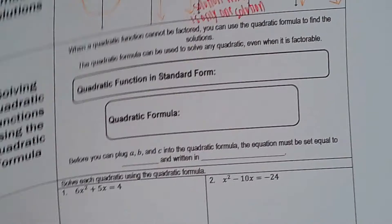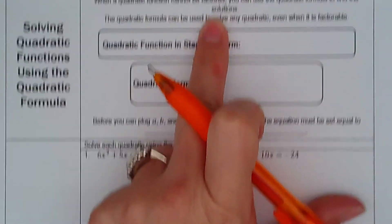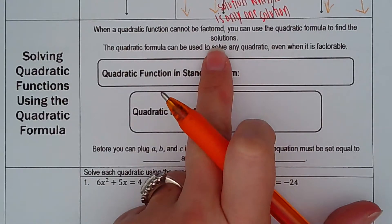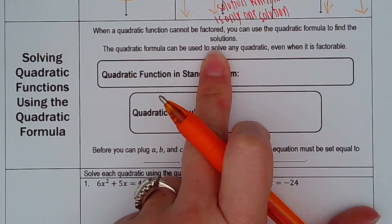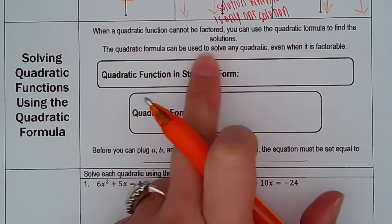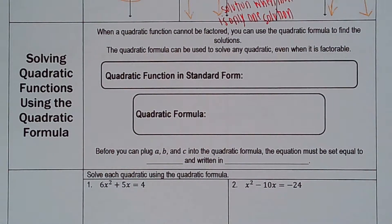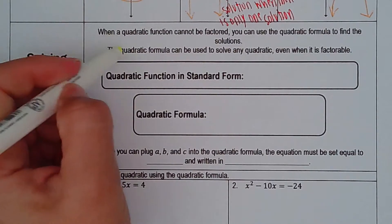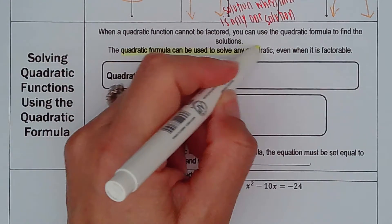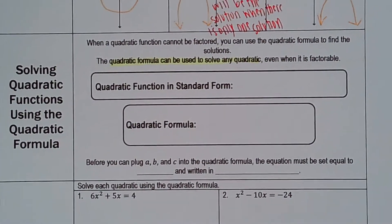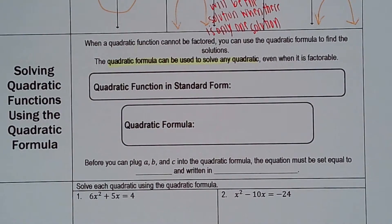When a quadratic function cannot be factored — because you guys are comfortable with factoring now — you can use the quadratic formula to find the solutions. The quadratic formula can be used to solve any quadratic. It might not work with square roots, it might be too hard to graph, you might not be able to factor it. But you can always use the quadratic formula, even when it's factorable.